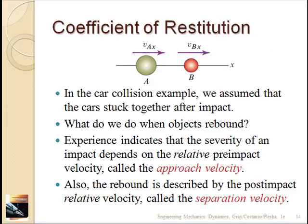That was for a perfectly plastic collision. The question is, what happens if they rebound from each other — either like billiard balls where they rebound perfectly with no energy loss, or something in between where there's a little permanent deformation and energy loss but the balls rebound afterwards? The way you handle problems like that is with the coefficient of restitution. For two material bodies colliding, the coefficient of restitution defines whether you're perfectly plastic (e = 0), perfectly elastic (e = 1), or somewhere in between.